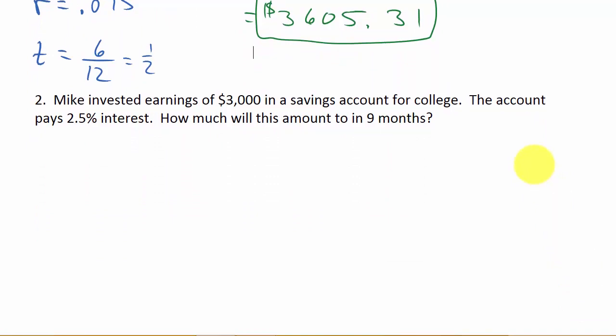So let's look at the next one. It says, Mike invested earnings of $3,000 in a savings account for college. The account pays 2.5% interest. How much will this amount to in nine months? We've got the same thing here. A equals P times 1 plus RT. And won't you pause the video and see if you can work this problem, and then play it and see if you got the answer correct.